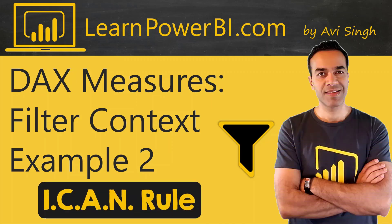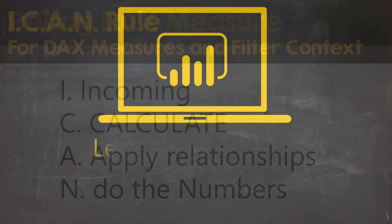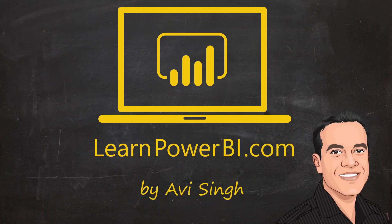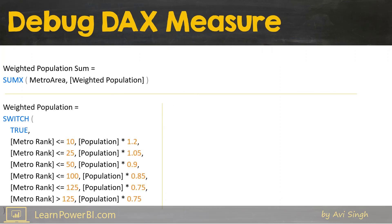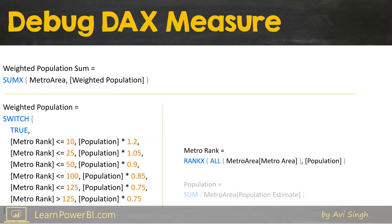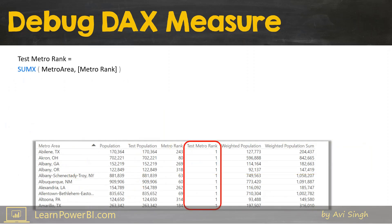Welcome back. This is part 2 of the video where we are going to debug a Power BI DAX measure using the ICANN rule. This is the setup we have been looking at — essentially a nested IF or a SWITCH function inside a SUMX. We had looked at the underlying measures Metro Rank and Population, and had zeroed in on Metro Rank because the debug measure showed it was breaking down inside SUMX, returning all ones instead of the expected result.